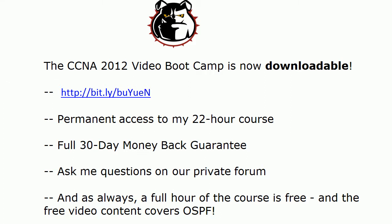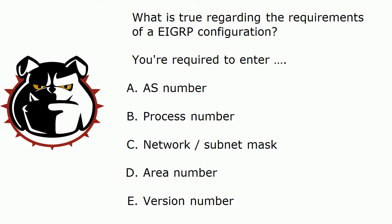Let's jump straight into today's questions. I'm going to go through them in a pretty good clip, so if you want to pause the video and think about one for a few seconds, that's fine. You are required to enter which of these when you're configuring EIGRP? You've got an AS number, process number, network mask, area number, or version number.